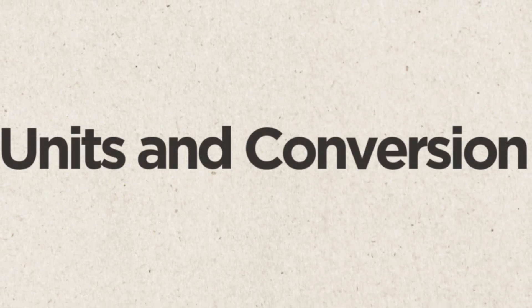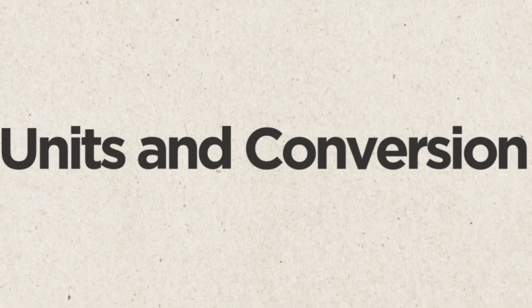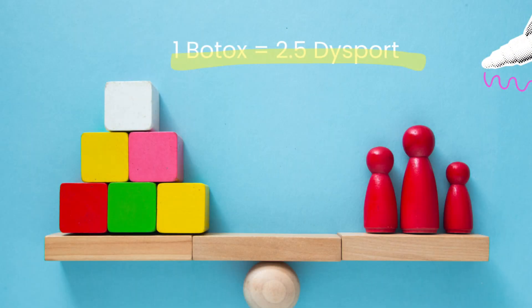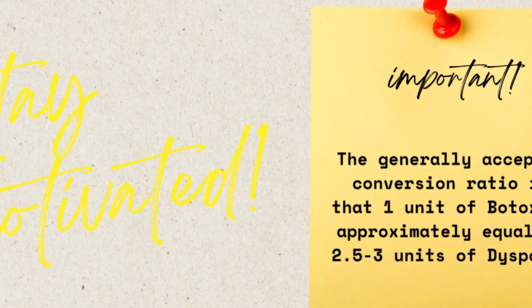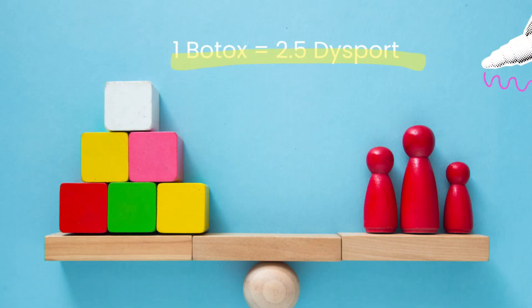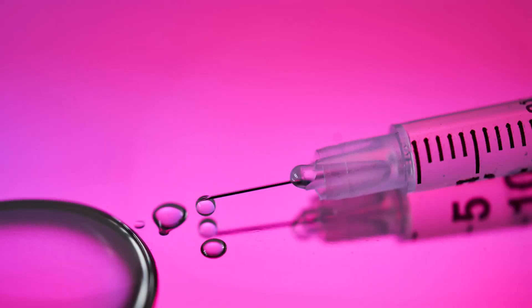Units and conversion: one of the most important points to remember is that dosage units are product-specific. One unit of Botox is not equal to one unit of Dysport. The generally accepted conversion ratio is that one unit of Botox is approximately equal to 2.5 to 3 units of Dysport. This has significant implications for clinical practice — if we assume the units are equivalent, we could either underdose or overdose a patient. Always refer to clinical data and established guidelines when converting doses between products.